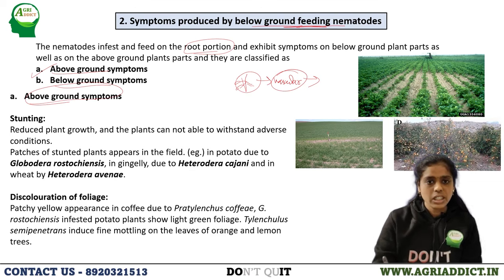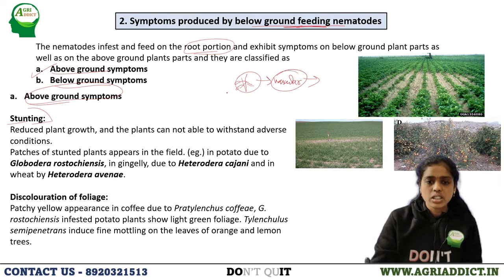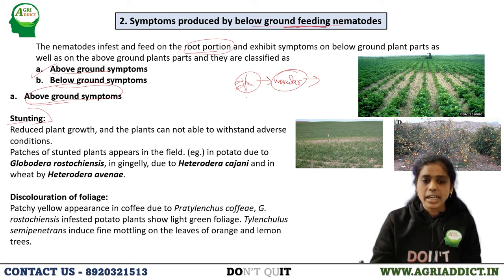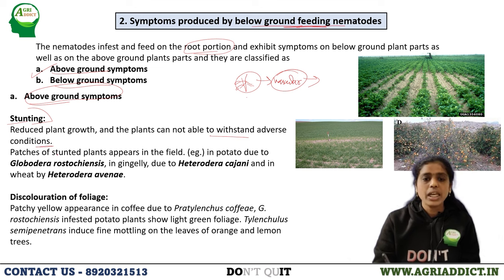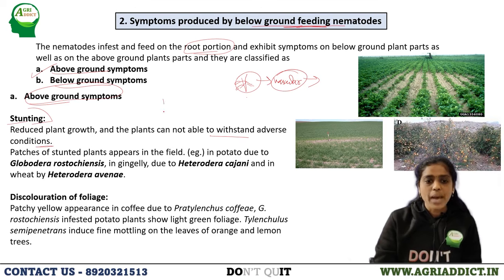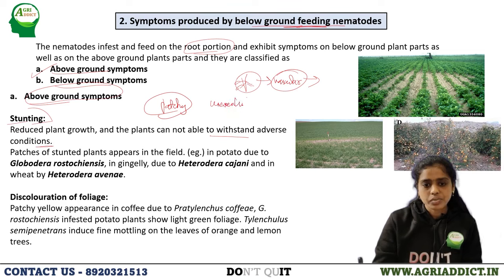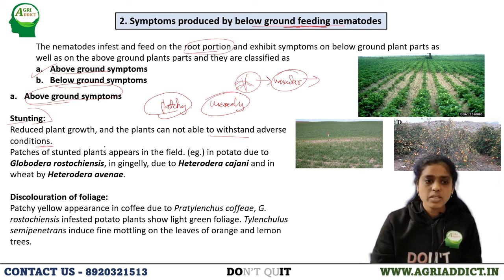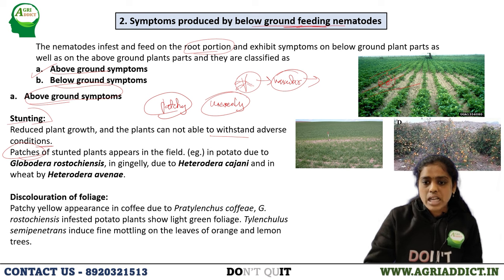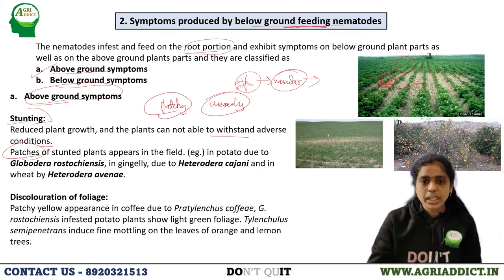Above-ground symptoms from below-ground feeding include stunting. The plants cannot withstand adverse conditions as the root system gets destructed. A key characteristic of nematode damage is the patchy appearance in the field — because nematodes are distributed unevenly in the field, symptoms appear in patches. A group of plants in one area will exhibit nematode infestation while others will not. This is the main characteristic symptom of nematodes. Examples include potato cyst nematode, Globodera rostochiensis, in sesame (Heterodera cajani), and in wheat (Heterodera avenae).